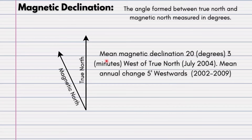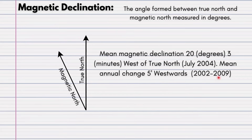Let us read the information: mean magnetic declination — 20 degrees, 3 minutes, west of true north, July 2004. Mean annual change is 5 minutes westwards, 2002 to 2009. Remember, the inverted comma symbol represents minutes.